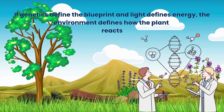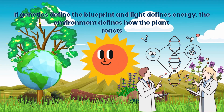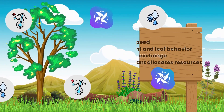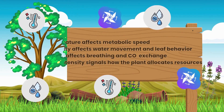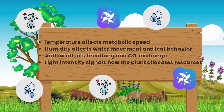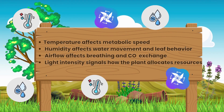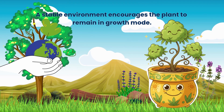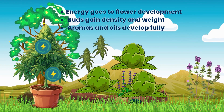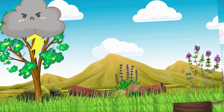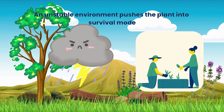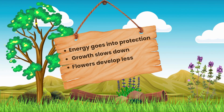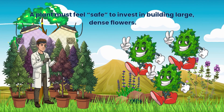If genetics define the blueprint and light defines energy, the environment defines how the plant reacts. Plants respond directly to the surrounding conditions. Temperature affects metabolic speed. Humidity affects water movement and leaf behaviour. Airflow affects breathing and CO2 exchange. Light intensity signals how the plant allocates resources. A stable environment encourages the plant to remain in growth mode — energy goes to flower development, buds gain density and weight, aromas and oils develop fully. An unstable environment pushes the plant into survival mode, where energy goes into protection and growth slows down. Flowers develop less. A plant must feel safe to invest in building large, dense flowers.